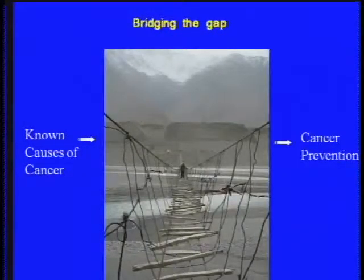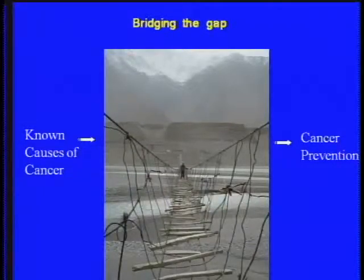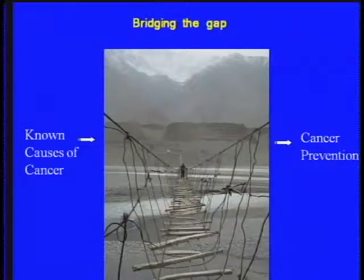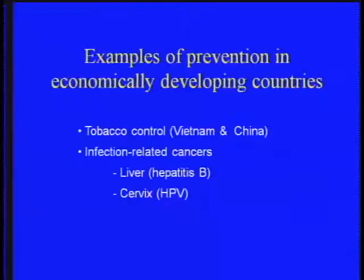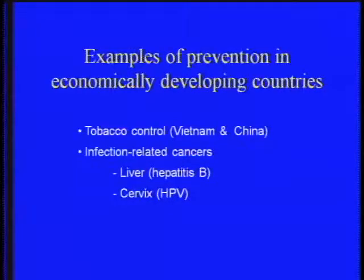I want to move to the second part of my talk — vignettes about preventive interventions in economically developing countries, and the rickety bridge connecting what we know about modifiable causes of cancer with actual implementation of effective prevention programs. I'll talk about tobacco control, contrasting Vietnam and China, and about infection-related cancers, focusing on liver cancer and hepatitis B.